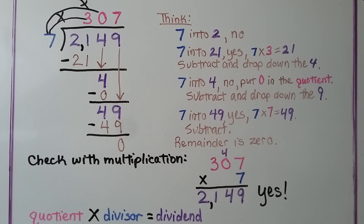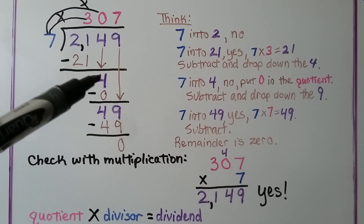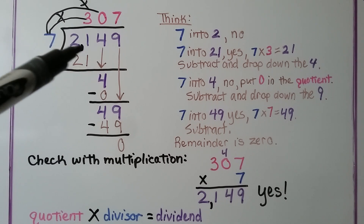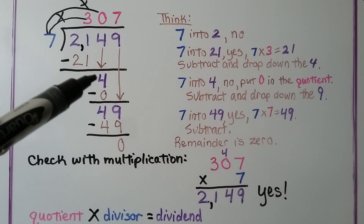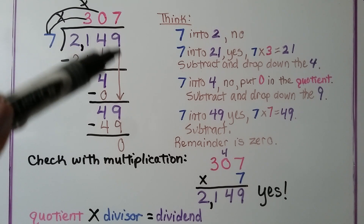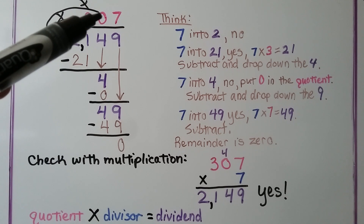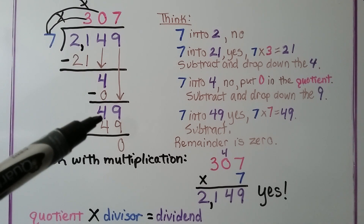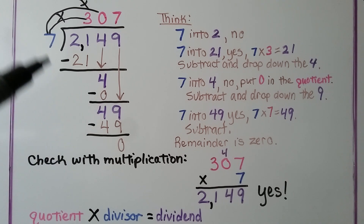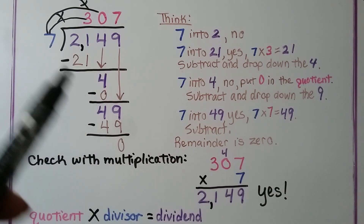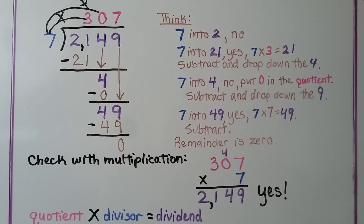We subtract and get 0. When it was the 4's turn to come down and 7 could not fit into that 4 — and it wasn't the 9's turn yet — we put a 0 as a placeholder and did the subtraction. Now it was the 9's turn to come down, and we say 7 goes into 49 how many times? We can check it with multiplication: we have 307 as our quotient. We multiply it by the divisor 7, and it is equal to 2,149. We did the quotient times the divisor to equal the dividend.